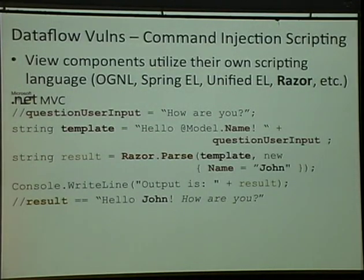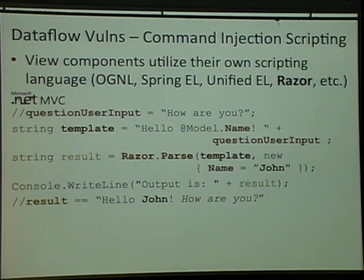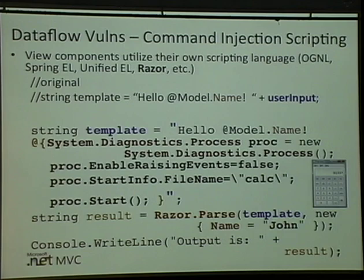Now let's talk about command injection. Every one of these web frameworks has some type of expression language they use to render data back to the user. In this particular case we're looking at .NET MVC and Razor. If user input in red comes from a user, they can use the ampersand curly brace to execute arbitrary code. If they pass in ampersand curly brace, any C# code will then be executable on the server.